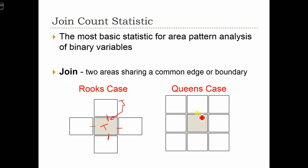In the queen's case, we're going to include the rook's joins, but we're also going to allow two polygons to be joined if they share a corner. So they don't actually share a common edge, but they do meet at a corner. So we're going to include these joins as well.